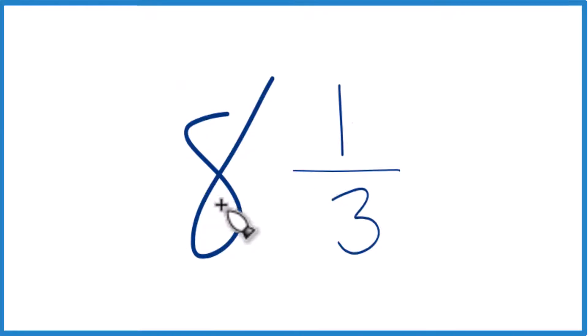You take the whole number, the 8, multiply it by 3. 8 times 3 is 24. Then that 24 plus 1, that is 25. So that's your numerator.